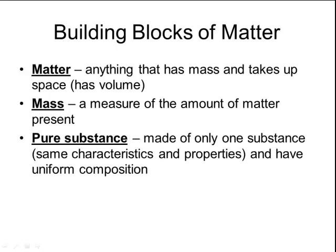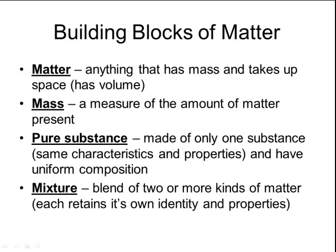Matter can be divided up into two different types. You can have a pure substance, which is any substance that is made of only one thing, and that substance has the same characteristics and properties throughout, so it has a uniform composition. No matter where you slice it or where you take the sample from, it will always have those same characteristics and properties.